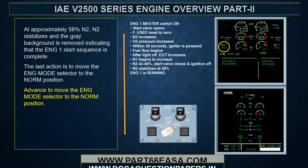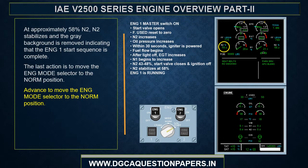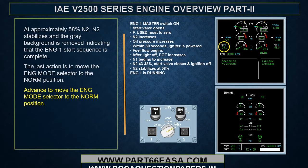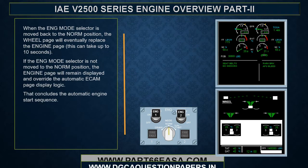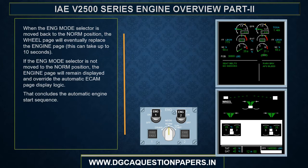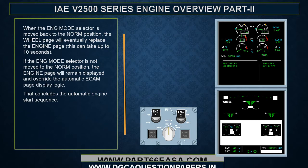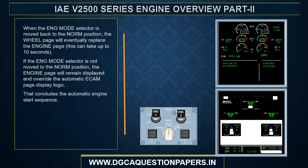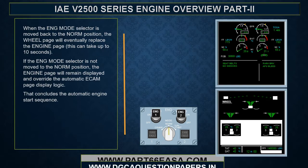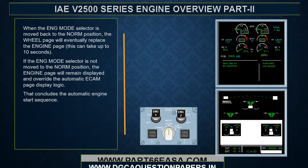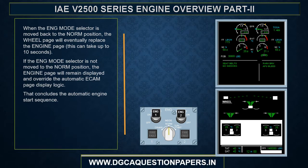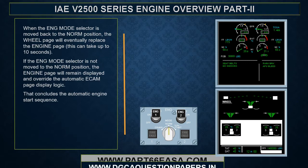The last action is to move the engine mode selector to the norm position. When moved back to norm, the wheel page will eventually replace the engine page — this can take up to 10 seconds. If the engine mode selector is not moved to norm, the engine page will remain displayed and override the automatic ECAM page display logic.